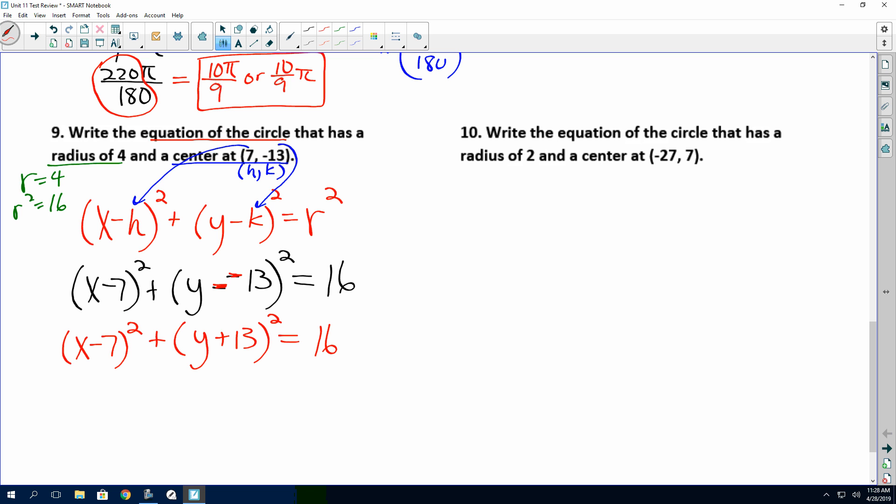The 7 was positive, but over here it becomes minus 7. The 13 was negative 13, but over here now it became a positive 13. So remember you're doing the opposite when you're plugging it in. And the same thing when you're taking it out. So right here on 10, here's your center. Here's your radius. Remember we're using radius squared. So you need that number.